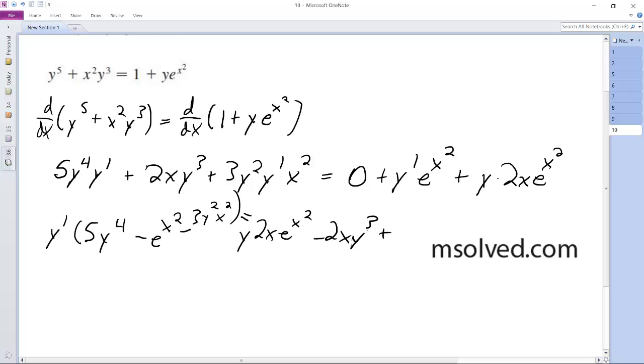Minus 2x. And that's it on that side. So I divide through by that. So y prime is going to be equal to 2xy e to the x squared minus 2xy cubed